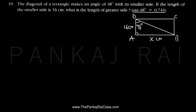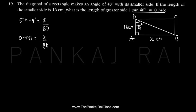Let us start with triangle BAD. Triangle BAD is a right angle triangle because this is a rectangle. So let us apply sine 48 here. Sine 48 degrees equals opposite over hypotenuse, which is AB over BD, so X over BD. That gives us 0.743 = X / BD, and cross-multiplying we get X = 0.743 × BD.